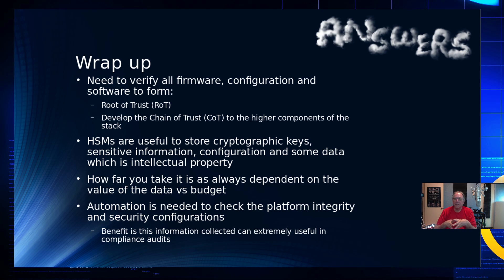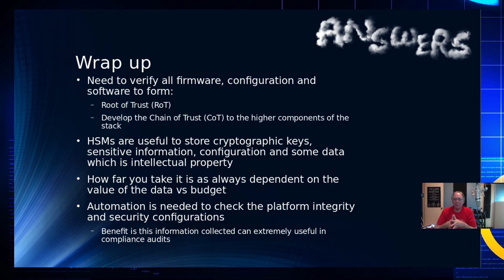HSMs can be TEEs — they are a very expensive one. But as with all things, how far you take it is dependent upon how much you have to lose if your data were to be exposed, and how much you're willing to budget to protect that data and the operation of your systems as a whole. Automation is needed to check platform integrity because there's just too much to ask a human being to do. The question you always have is: if you're automating something, what checks it — what makes sure the verification system is in compliance and hasn't been modified to exclude the parts of systems that have been modified? You have to keep that particular part under pretty tight lock. The benefit is that the collected data from the RAS can be extremely useful when doing compliance audits.